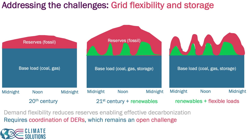In order to have this demand flexibility, you need to coordinate a lot of these so-called distributed energy resources, which are resources that sit behind the customer meters. These are typically not very large resources, so to have an impact on the overall grid, you have to coordinate large numbers of them.